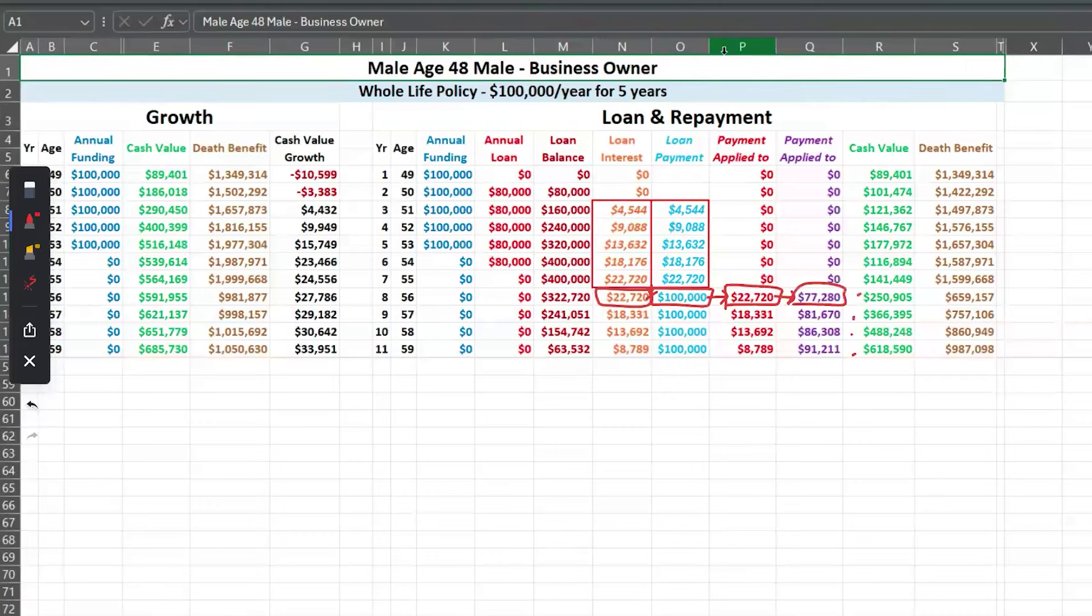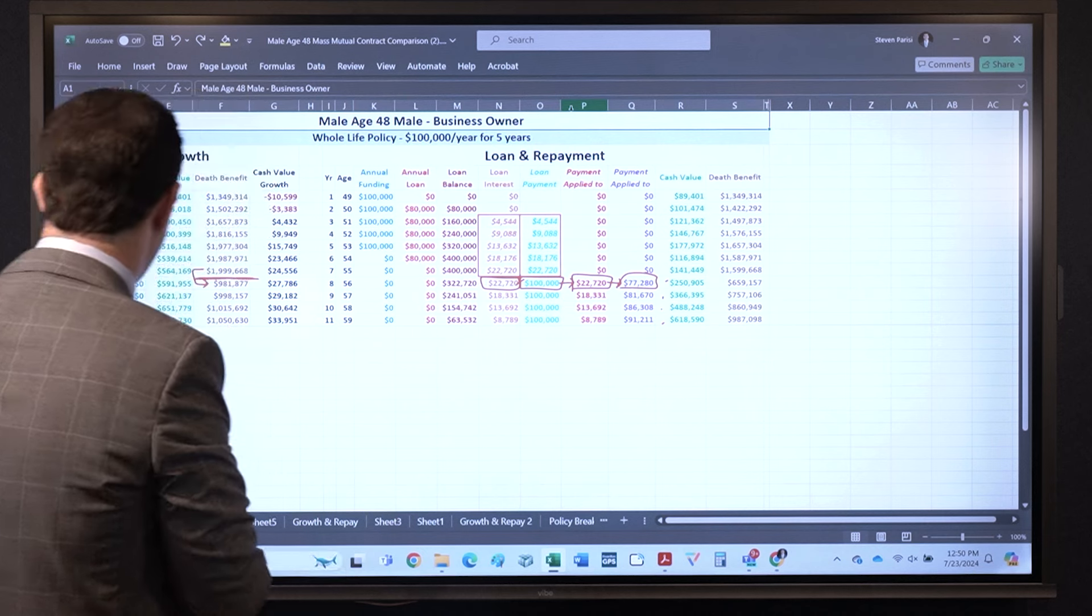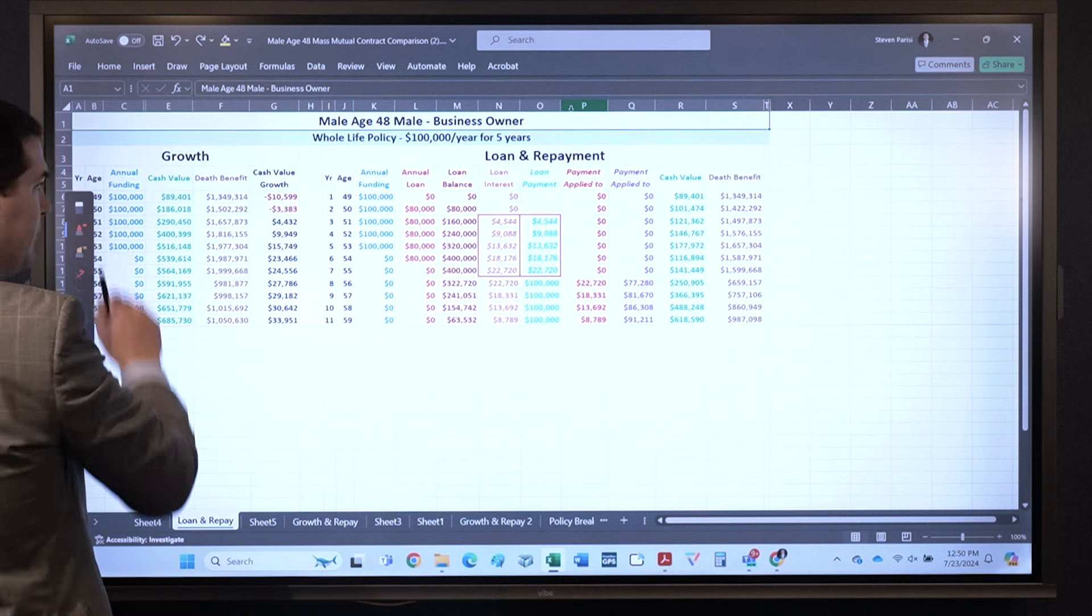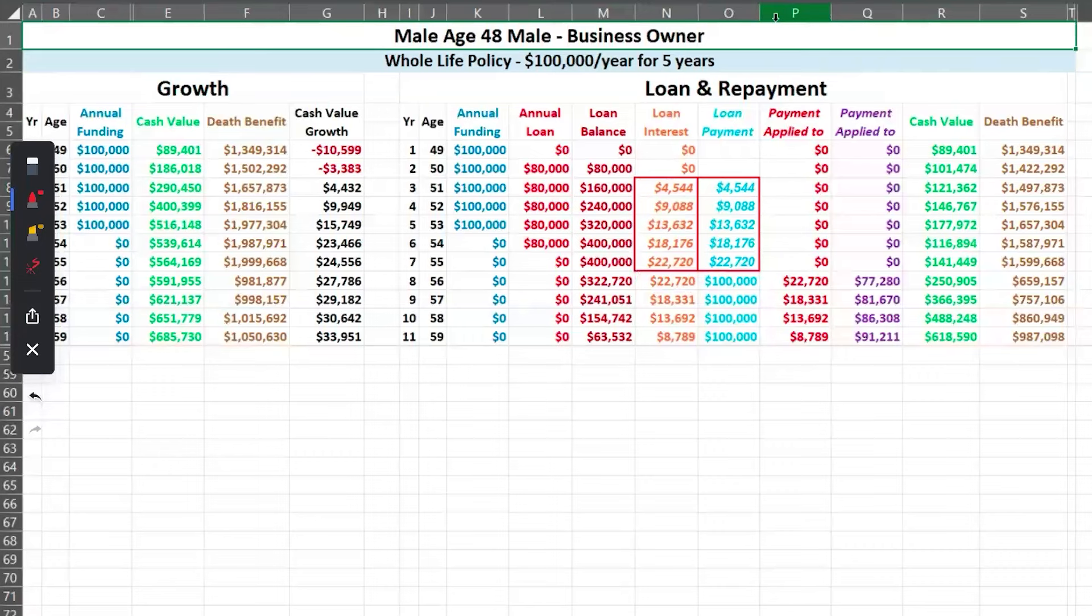So over here we actually reduce the death benefit after seven years. That's something we do to maximize the cash value if we're not going to fund it anymore. It's optional, but that drop occurred with the non-loan scenario as well. And when that loan is paid back, what do you notice at age 60?